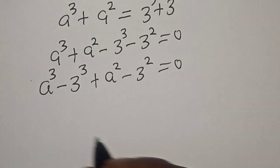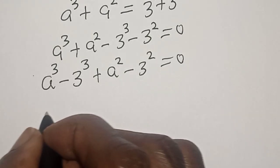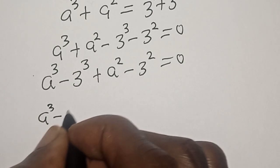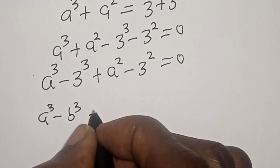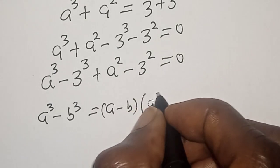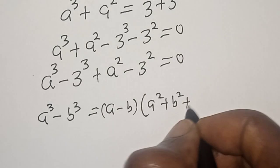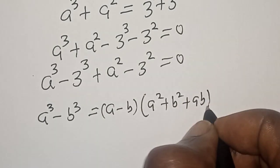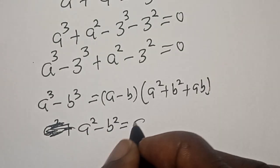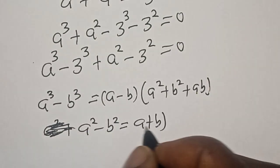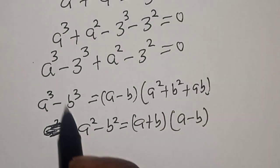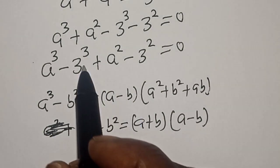Let's remember these identities: a raised to power 3 minus b raised to power 3 equals a minus b times the quantity a squared plus b squared plus ab. Also, a squared minus b squared equals a plus b multiplied by a minus b. In this case, our a is equal to a and our b is equal to 3.